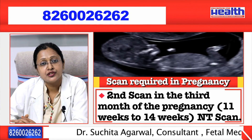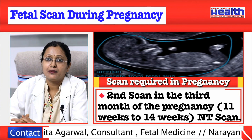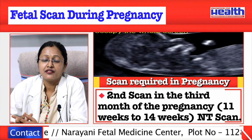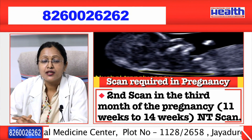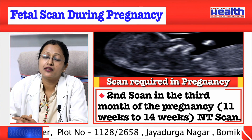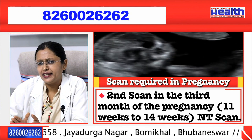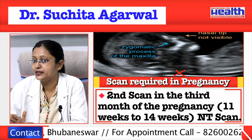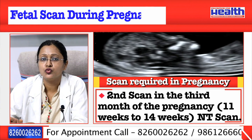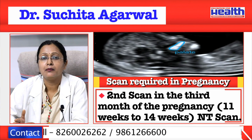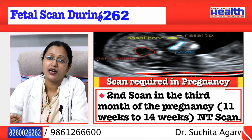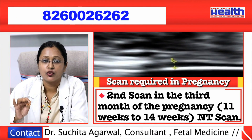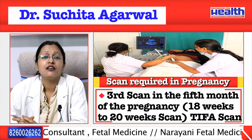The second scan is the third-month scan, done around 11 to 14 weeks. This is known as the NT scan or first trimester scan, also called a mini anomaly scan, because many anomalies can be detected in the first trimester itself. A structural survey is done, and the most important aspect of this scan is the first trimester risk assessment for chromosomal abnormalities. This is done by combining the NT scan along with the double marker. This gives a very good risk assessment for having a chromosomally abnormal baby, such as a Down syndrome baby, or any chromosomally or genetically abnormal baby.